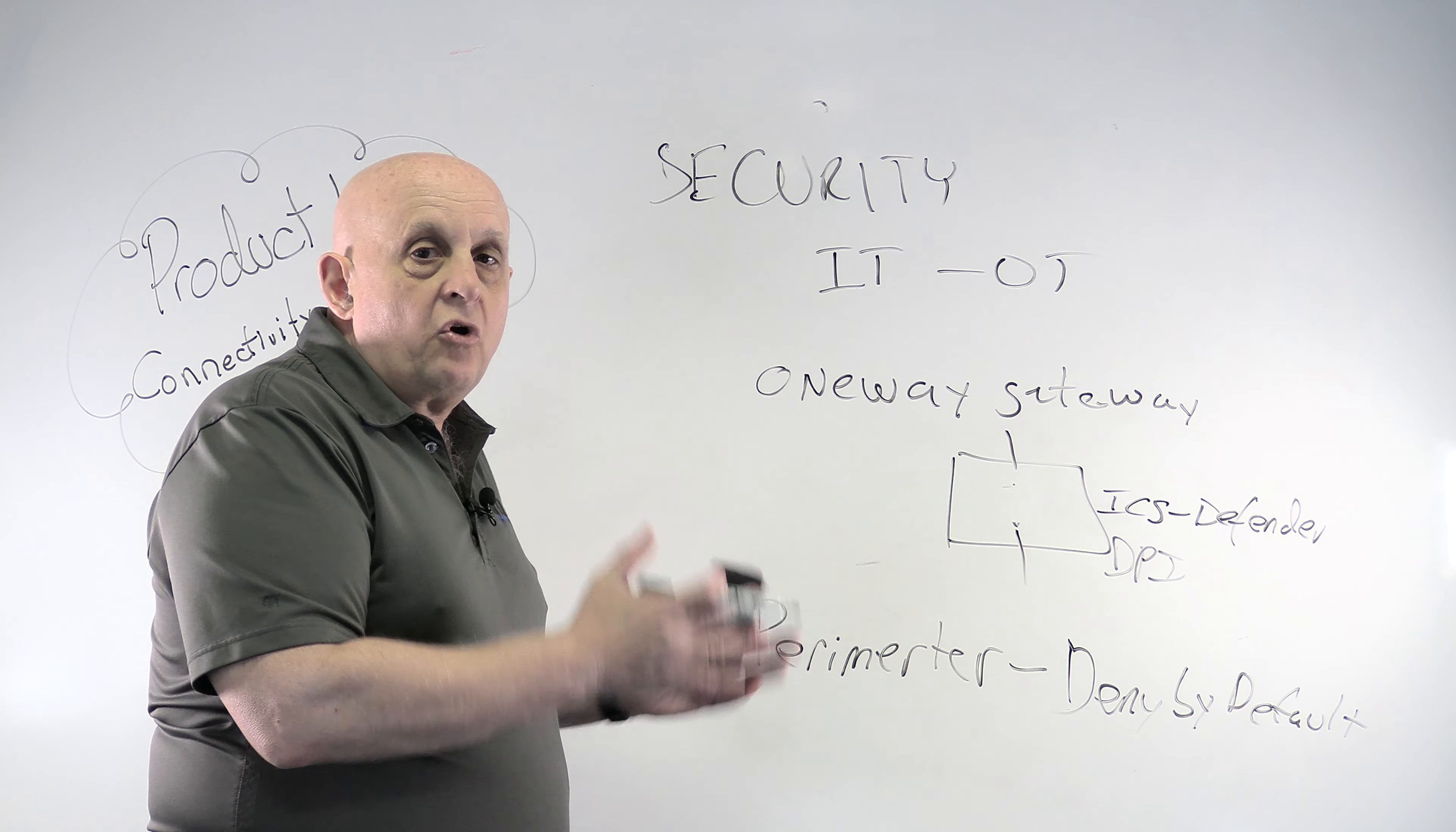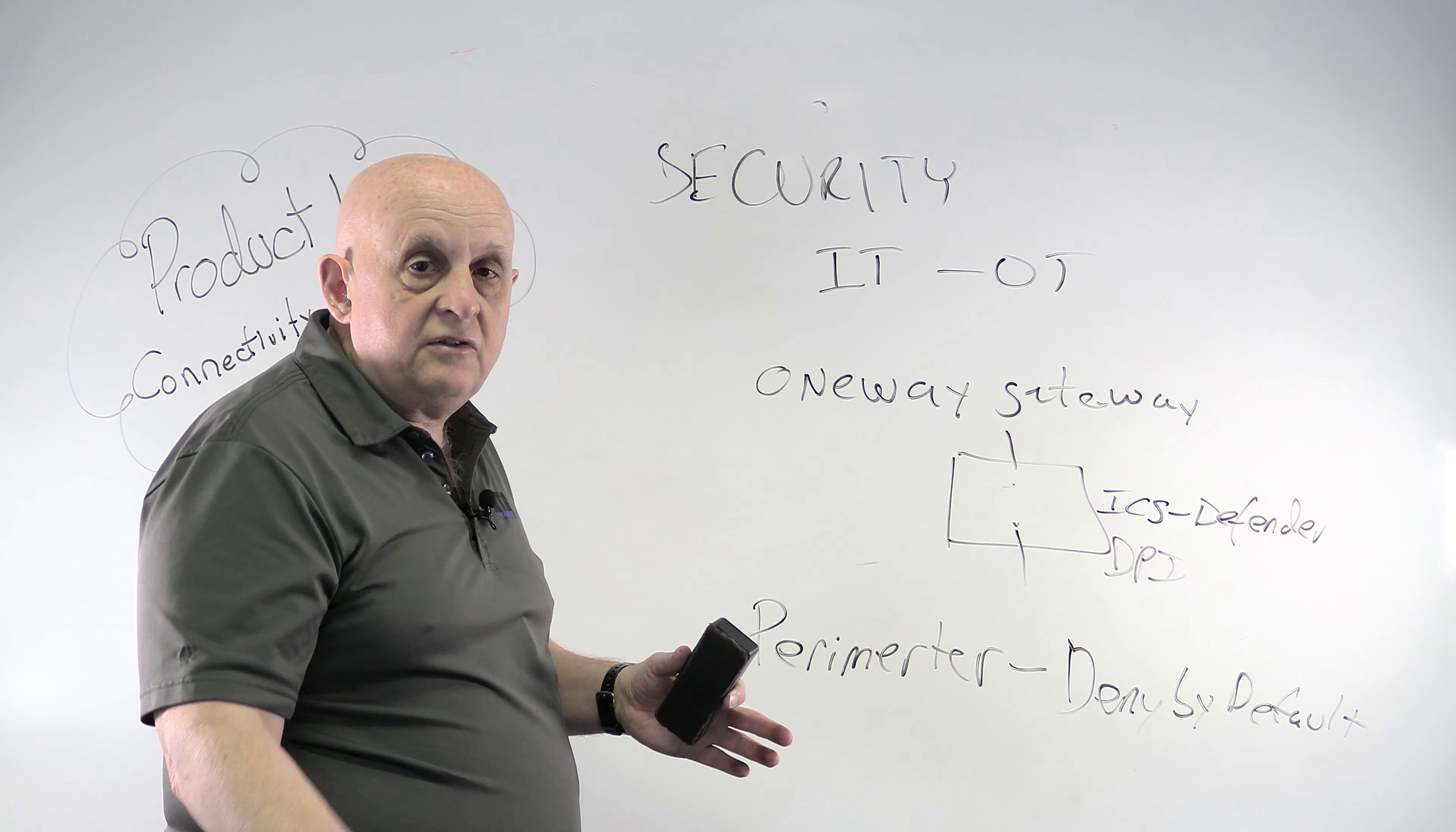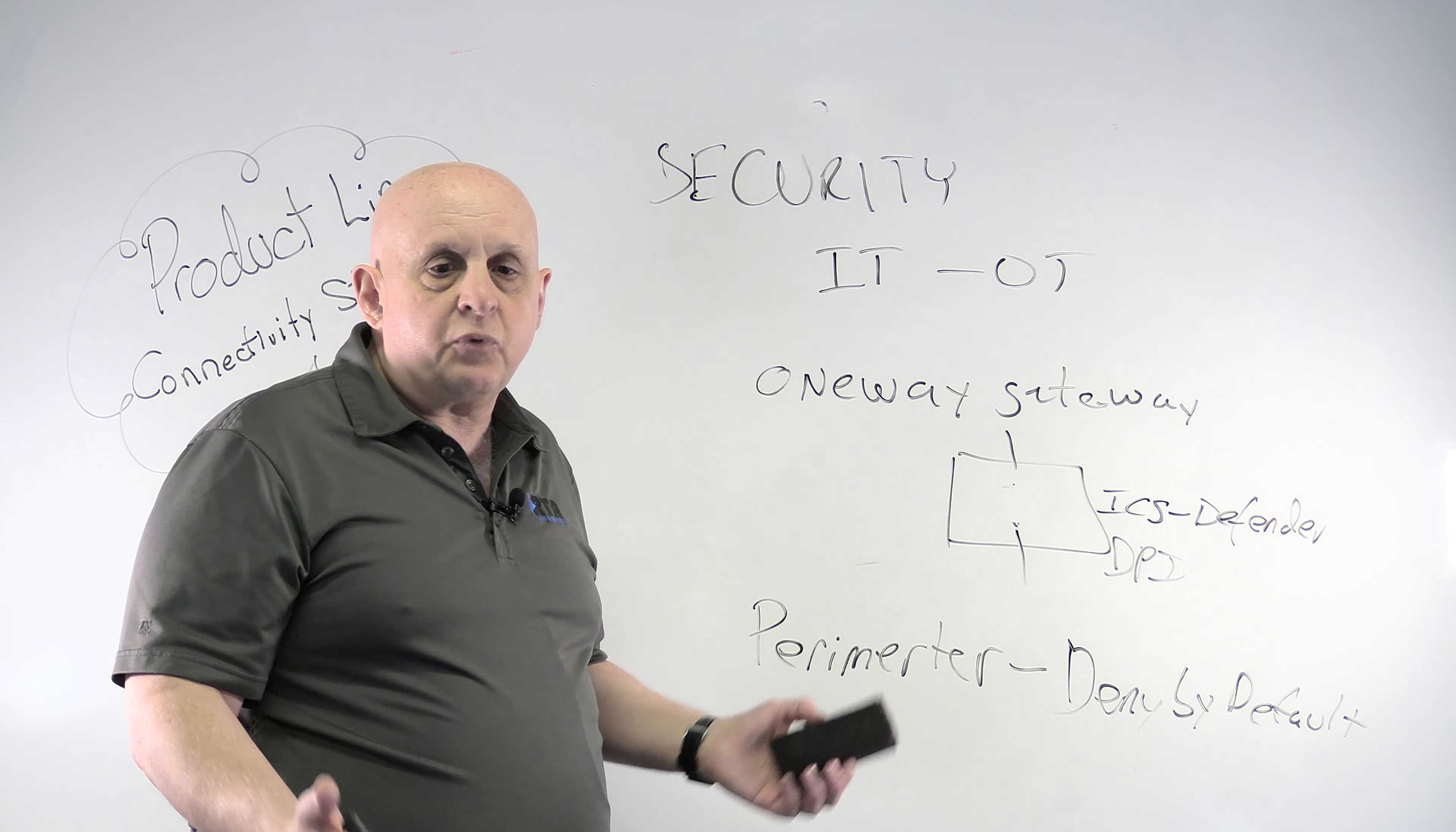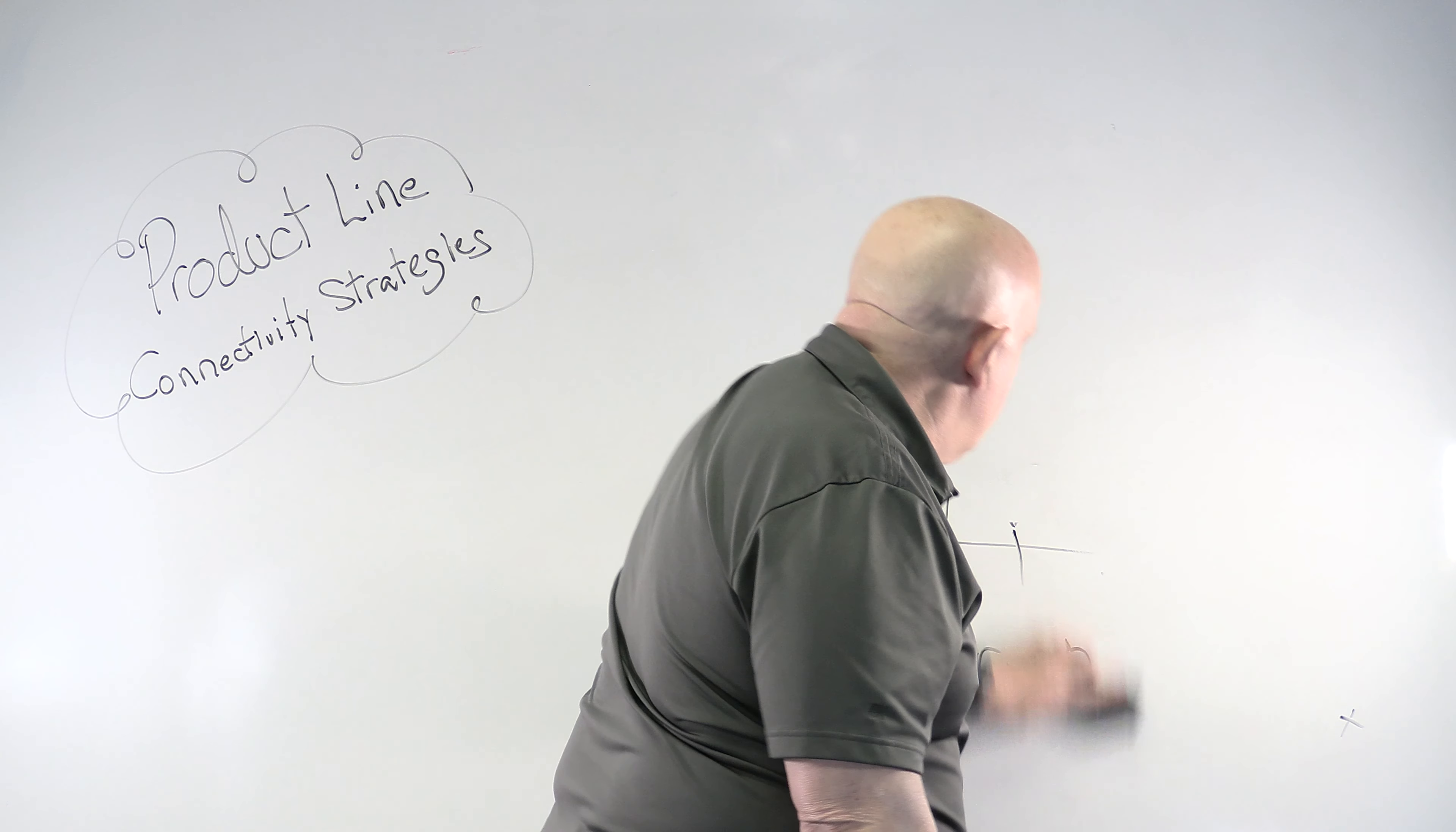So that's perimeter security denied by default. The point here is, you have to figure out how you're going to protect the control system when you deploy your device, whether it's an IT device that needs data from the factory floor or it's a device in the control system. Security is a prime thing that you need to think about.